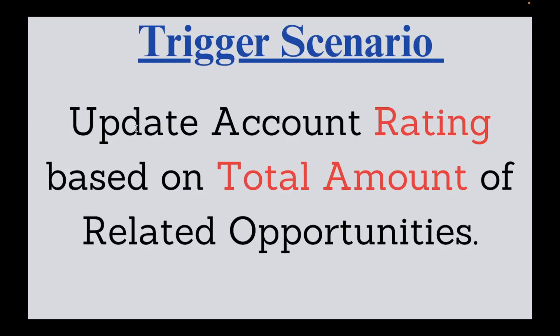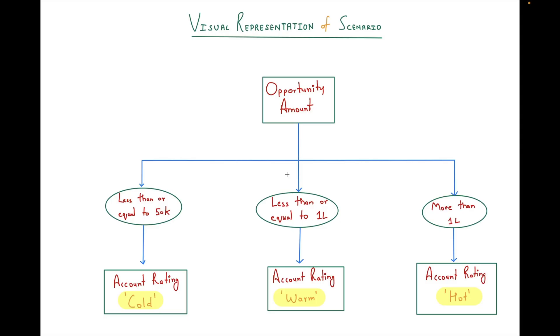Today's requirement is to update the Account Rating field based on the total amount of related Opportunities. There are three conditions: first, if the total amount is less than or equal to 50,000 then the rating should be Cold; second, if the total amount is less than or equal to 1 lakh then the rating should be Warm; and third, if the total amount is greater than 1 lakh then the rating should be Hot.